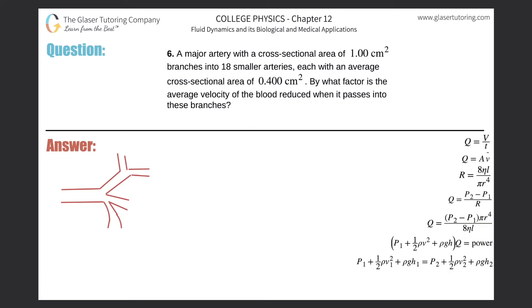Number six: A major artery with a cross-sectional area of one squared centimeter branches into 18 smaller arteries, each with an average cross-sectional area of 0.4 squared centimeters. By what factor is the average velocity of the blood reduced when it passes into these branches?